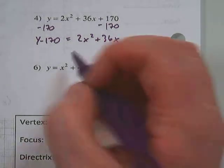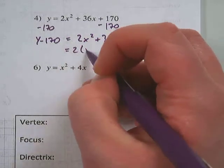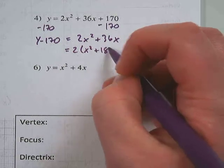Now we have to pull out this 2. So we have 2 times x squared plus 18x.